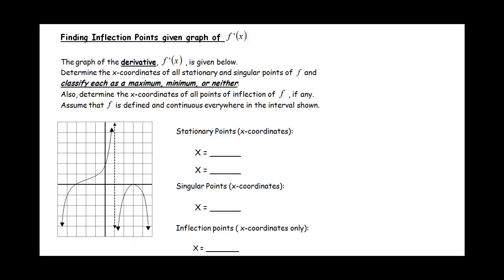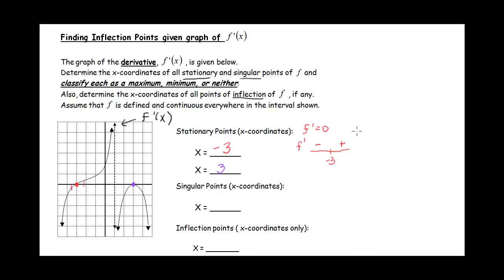Let's look at one more example. The graph is of f prime, and we need to find and classify stationary and singular points, then find inflection points. For stationary points, f prime equals zero at x equals negative 3 and at x equals positive 3. At x equals negative 3, f prime is negative to the left and positive to the right, so the original graph goes down, levels out, and goes back up — this is a minimum.